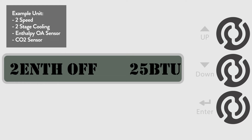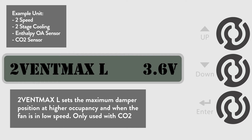The next several screens deal with CO2 sensors. In the 5 configuration state, we told the controller we had a CO2 sensor and set the sensor voltage. These next adjustments will set the minimum and maximum damper position settings for the controller when not in free cooling. These settings are made by adjusting the voltage to the economizer actuator. Since we have a 2-speed unit, we have a minimum and maximum position damper setting for both low and high speed. Go to the 2 Vent Max L menu to set the CO2 sensor's maximum non-free cooling position when the unit is in low speed. The default is 3.6 volts, but let's change that to 3.4 volts.